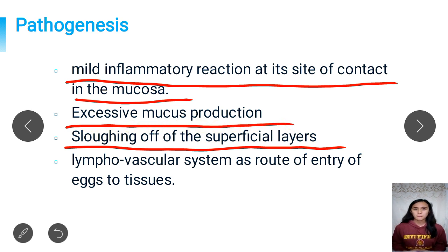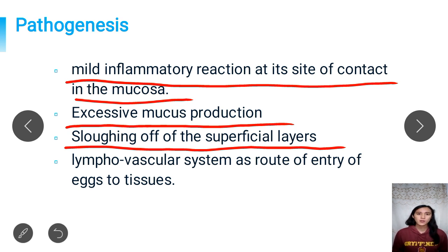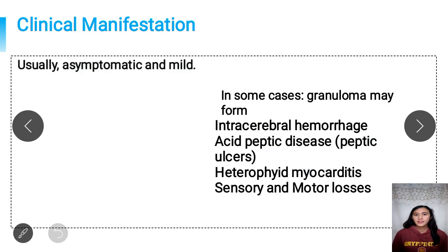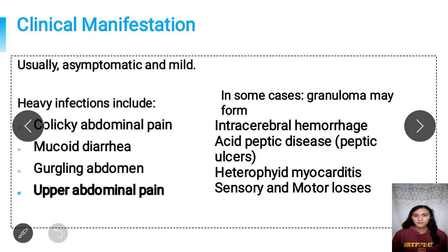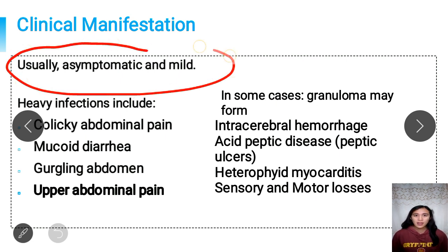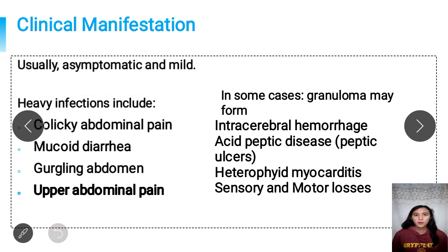There are reports from Africa showing that adult worms tend to burrow deep into the intestinal walls where they become trapped and eventually die. The eggs of those dead worms can then be filtered through the lymphovascular system — through lymphatic vessels and blood vessels — carrying eggs and depositing them into various tissues, most commonly the brain, spinal cord, and heart. Heterophaisis is a self-limiting infection. In light infections, it is usually asymptomatic and mild. In heavy infections, symptoms can include colicky abdominal pain, gurgling abdomen, upper abdominal pain, and mucus in the stool accompanied by diarrhea.